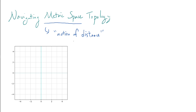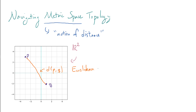One very basic example would be R2, which consists of pairs of real numbers and can be represented as an XY plane, as you've probably seen in high school. For R2, if I have two points on the plane — say a point P and a point Q — there is a really natural way of measuring the distance between P and Q. You can just let that be the straight line distance between P and Q. And this would be an example of a Euclidean metric.